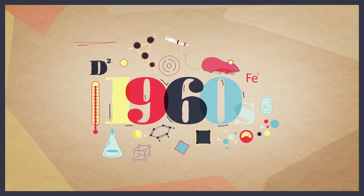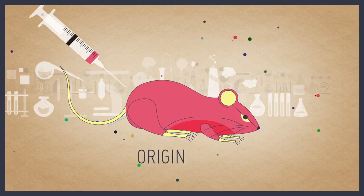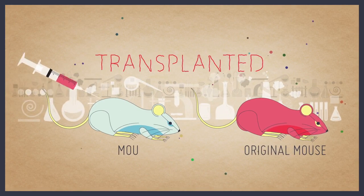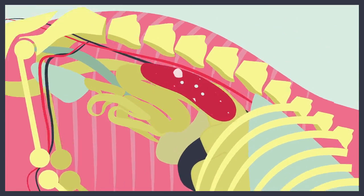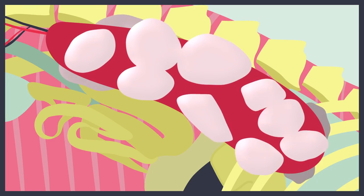In the early 1960s, it was shown that if bone marrow was taken from one mouse and transplanted into another, rare and specialized cells could travel to the spleen where they would divide and form small colonies.